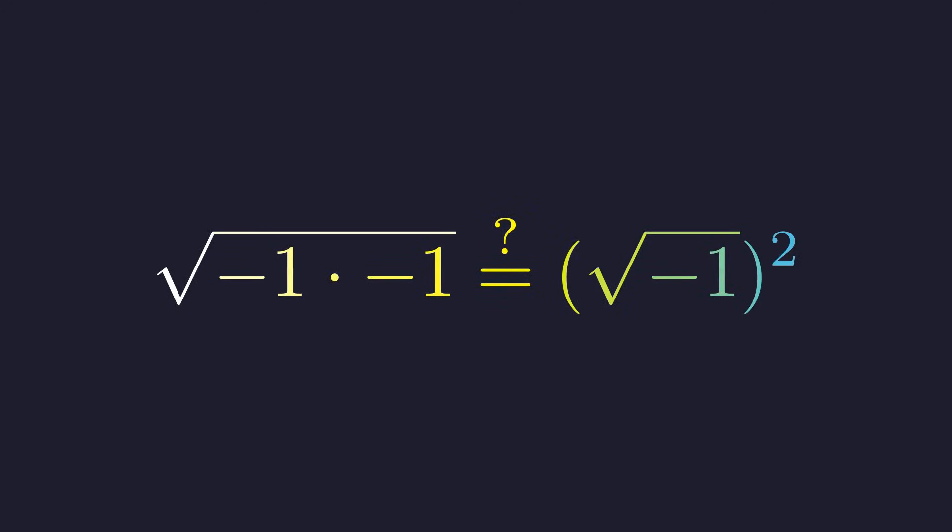Welcome back to Mental Math. Here's a question that looks innocent, but it's about to reveal something subtle about complex numbers. Does the square root of negative one times negative one equal the square root of negative one all squared? At first glance, you might think they should be the same. Let's see what actually happens.